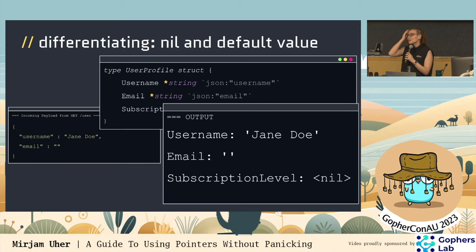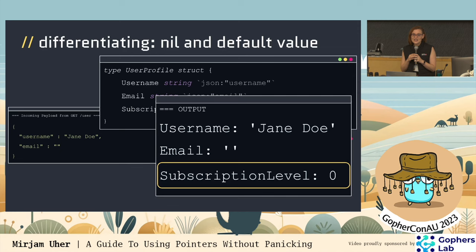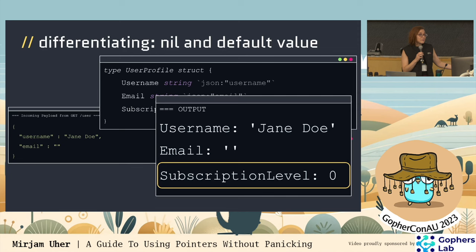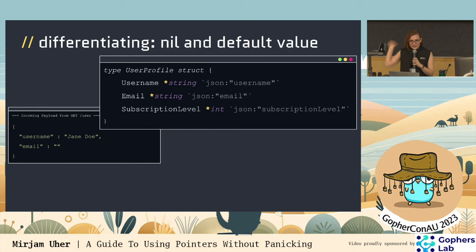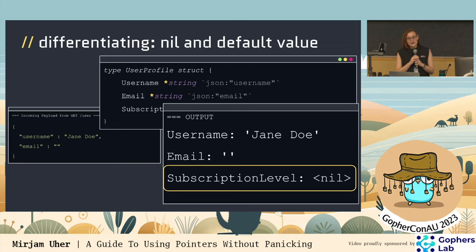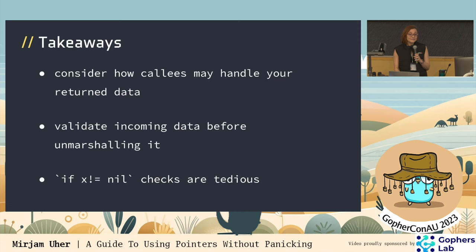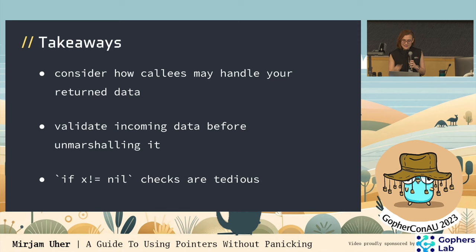That strategy meant I was on my umpteenth 'if blah does not equal nil' check with very nested data — if field one not nil, if field one dot field two not nil, if field one dot field two dot field three not nil — and it was like Java code. Very error-prone and tedious to write test cases for. Making everything values isn't a solution either, because you can't always use zero or empty string as 'invalid' — what about a bool? Is false always invalid? Really, the answer is: validate your incoming data before un-marshaling it. There are great libraries and JSON tags for checking incoming payloads. Use those instead of relying on pointers. The takeaways: consider how colleagues may handle your returned data, validate incoming data before un-marshaling, and nil checks are tedious but helpful.